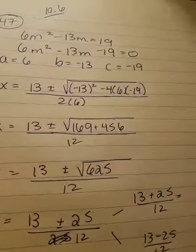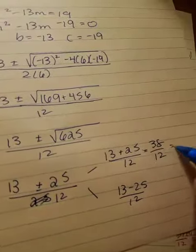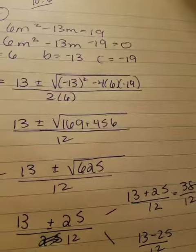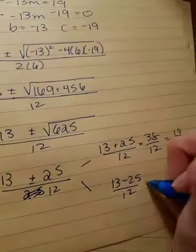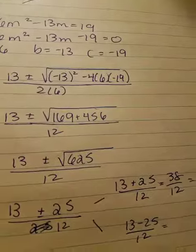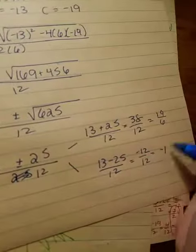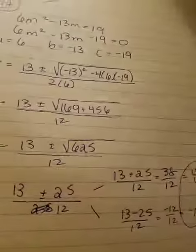So 13 plus 25, that gives you 38 over 12. And 38 twelfths, what does that simplify to? You're going to tell me 19 over 6. 13 minus 25 is negative 12, divided by 12 is negative 1. So those are your two answers.